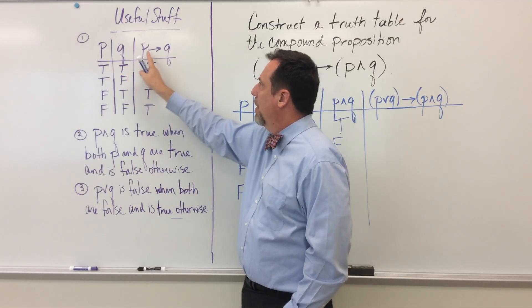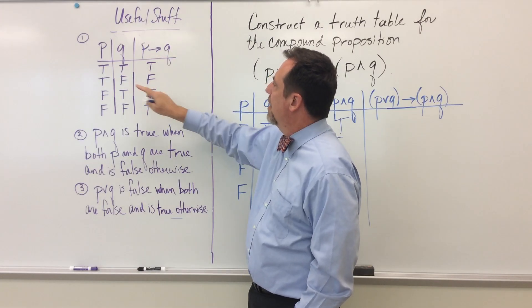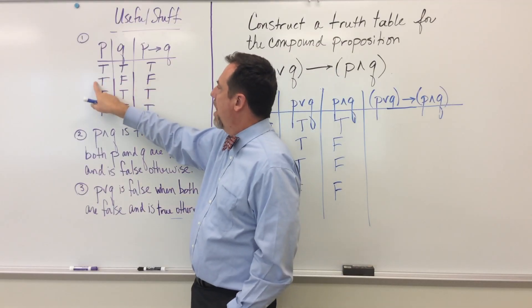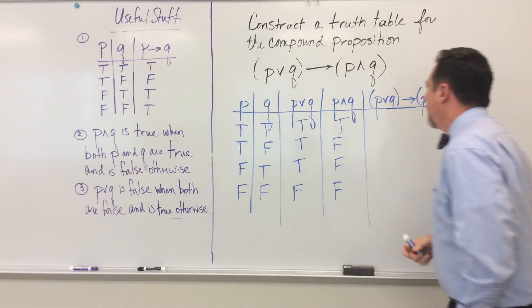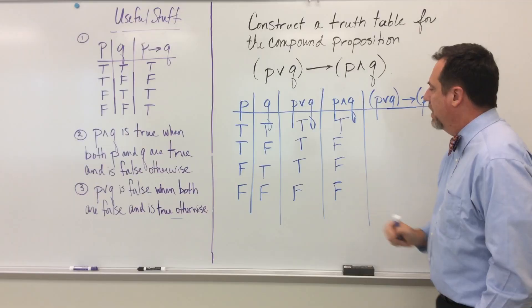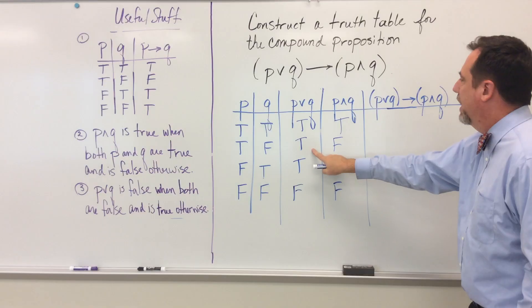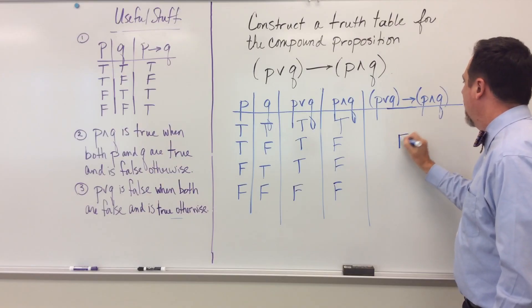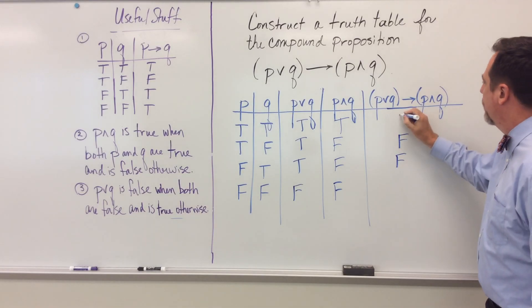So it turns out that when you have if P then Q, the only time that that conditional is false is when the hypothesis is true and the conclusion is false. So over here, I have the hypothesis and the conclusion already laid out. And it occurs twice in our problem here that the hypothesis, which is this guy right here, P or Q, is true and the conclusion P and Q is false. So that's my only time that I have to worry about getting a false when I have a conditional. The other two are going to be true.